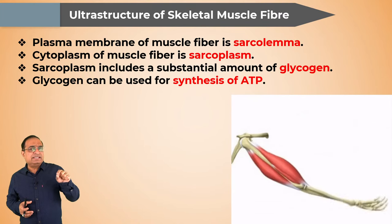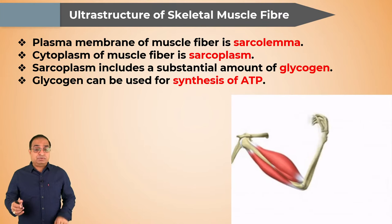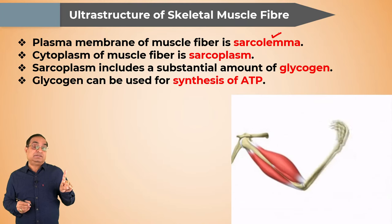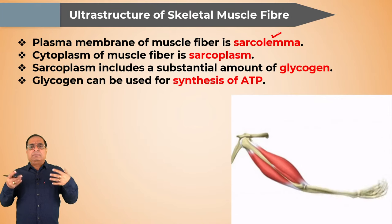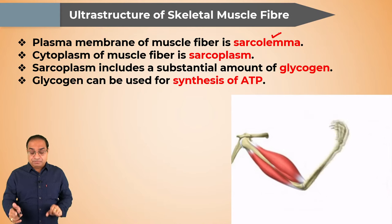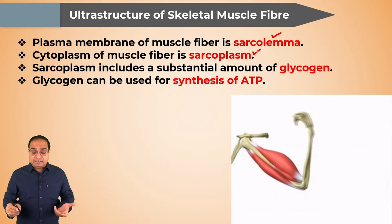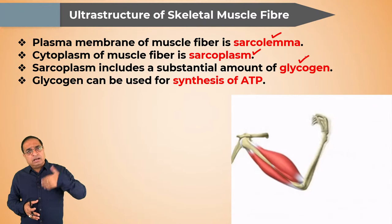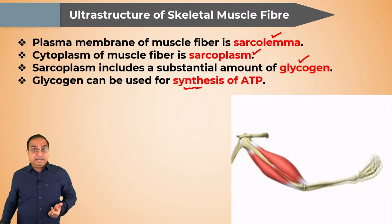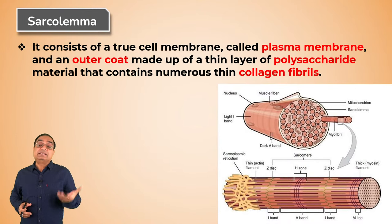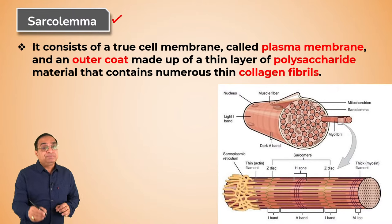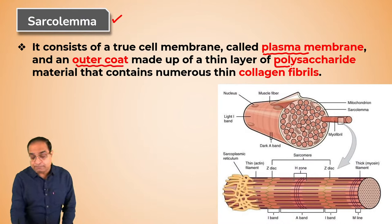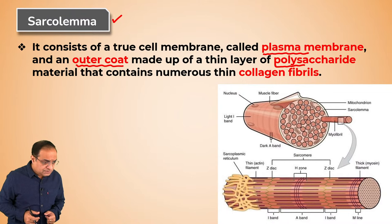Let us quickly learn some terminology related to a muscle fiber structure. The plasma membrane of a single muscle fiber is called the sarcolemma. A muscle fiber — a single cell — is also called a myocyte, and it is formed by fusion of many myoblasts, which are the muscle-forming cells present in an embryo. The cytoplasm of a muscle fiber is called sarcoplasm, and it contains a large amount of glycogen used for ATP synthesis.